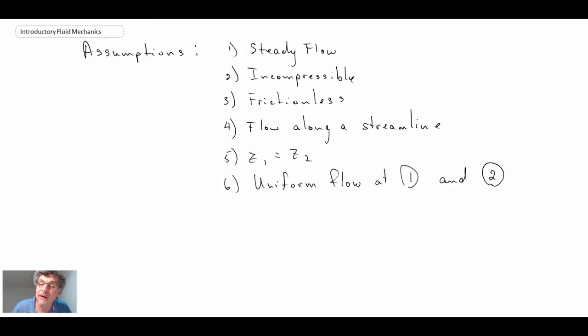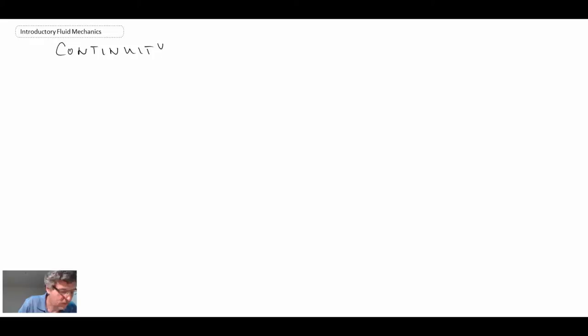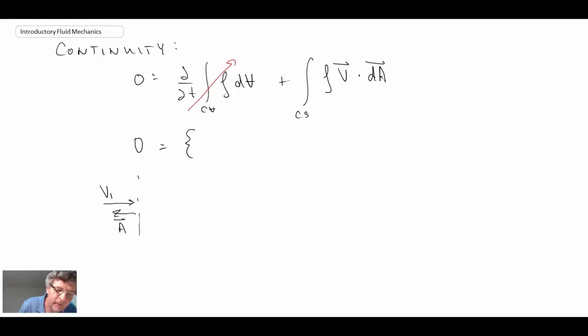We're going to begin with the continuity equation. We have steady flow, so the first term disappears, and we're left with the mass flux terms. On the inlet side, we have velocity coming in and the area vector pointing outward, so this is going to be negative. For the second term at the jet itself, we have velocity in that direction, the area vector pointing out, the dot product is positive.